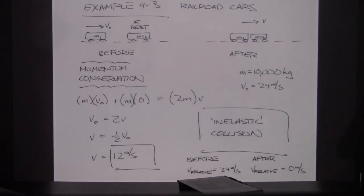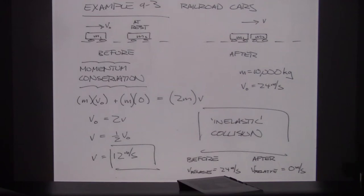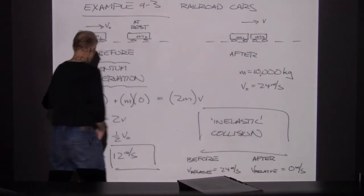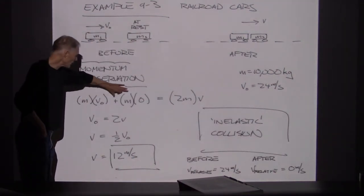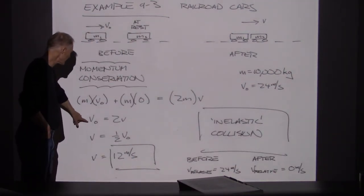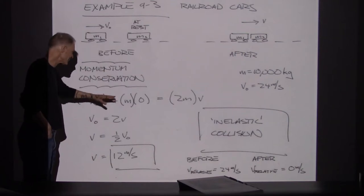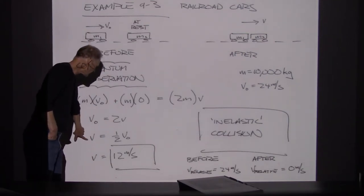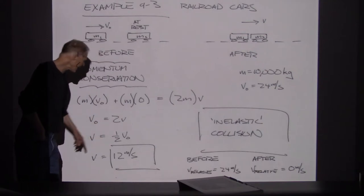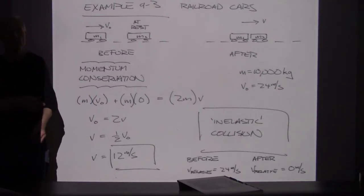Anything that comes up short is considered inelastic or not totally elastic. There's totally elastic, there's totally inelastic, and then all the area in between, which is still referred to as inelastic. So let's put the numbers together using the momentum formulas. We can cancel out the masses, giving us V0 equals 2 times V, so V equals 1/2 V0 — that's 12 meters per second.